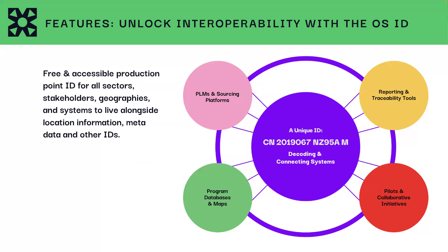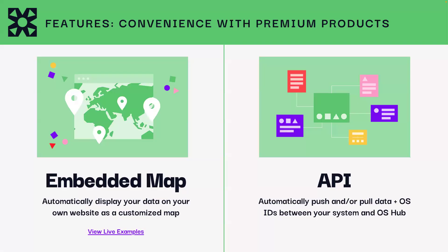If you manage a dataset that you want to keep deduplicated and connect with others, the OS ID serves as an umbrella ID that can run across all systems, sectors, and tools, and make it easy for you to match your dataset with others. We also offer two paid premium features which add extra convenience: embed a customized supply chain map on your website that will automatically update when you update your data in OS Hub, or connect to our API to take everything you can do in the public good and automate it.